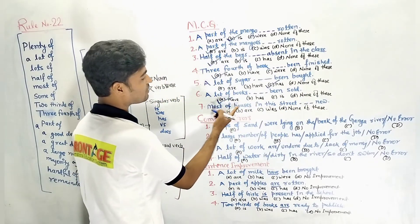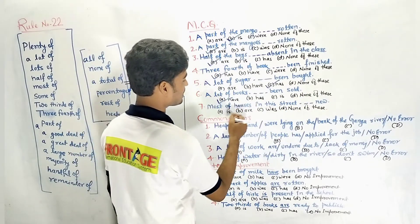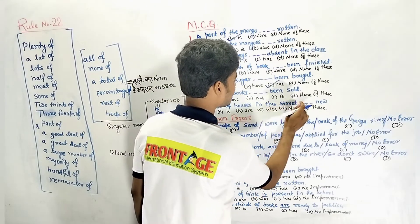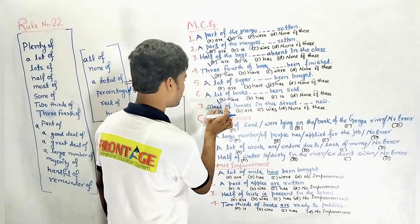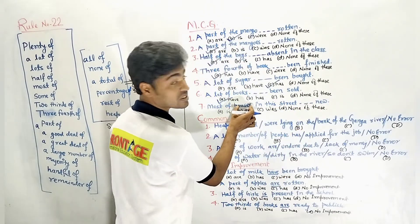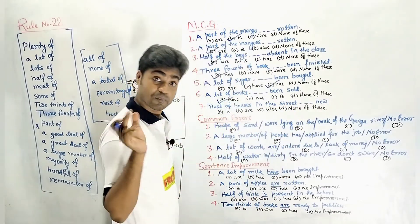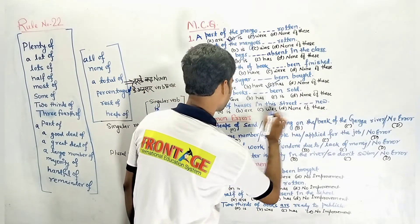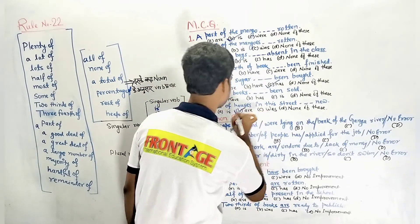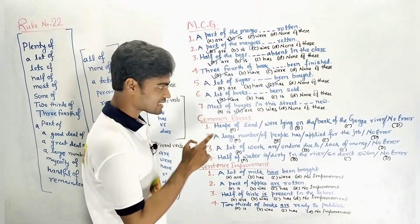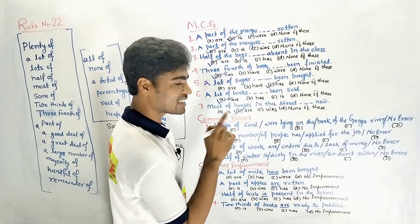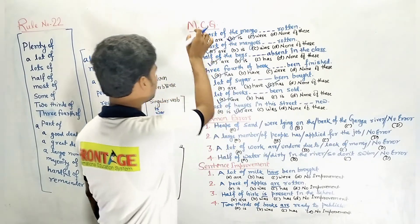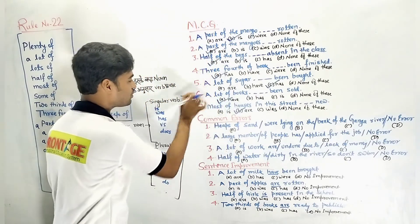Most of houses in this street — dash — new. Most of houses is plural. Among the four options, the plural one is 'are'. So: Most of the houses in this street are new. That covers the MCQs.